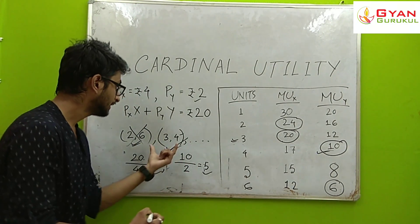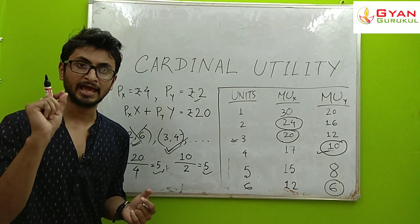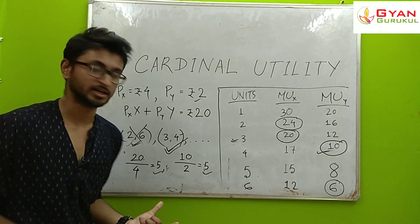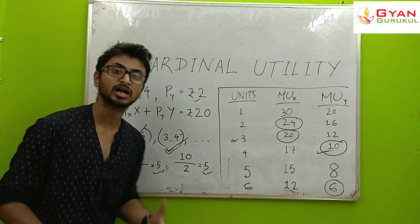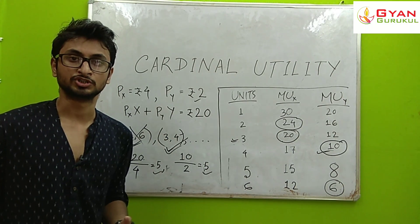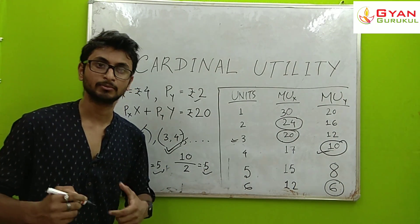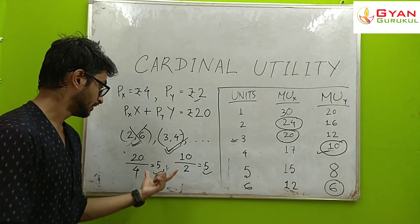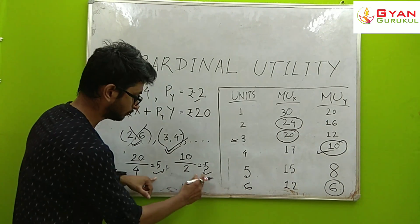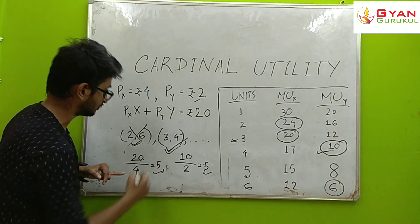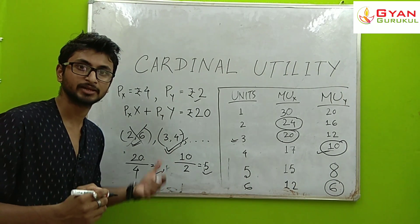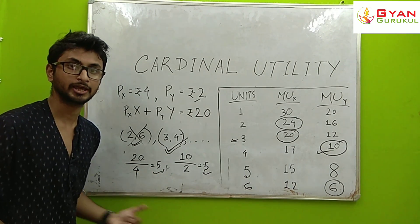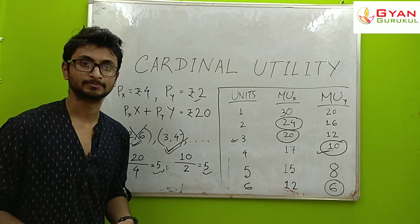At this equilibrium point, one rupee spent on both goods gives the same level of utility. The marginal utility ratios are equal, confirming the consumer is in equilibrium. This is the equilibrium condition of the Cardinal Utility — Marginal Utility analysis. Thank you.